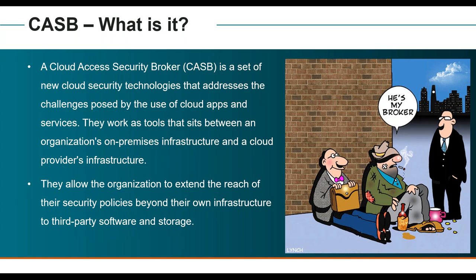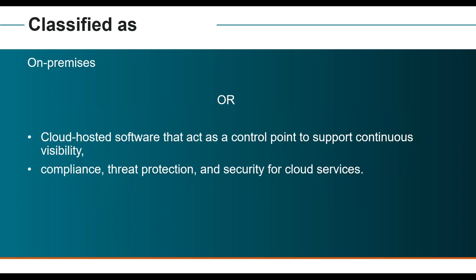There are two major deployment types. One is on-premise, where you can deploy an appliance, virtual software, or virtual machine onto your network. The second is cloud-hosted software for continual visibility, compliance, data protection, and security for your cloud services. The most popular today is cloud-hosted software, because nobody wants the overhead of managing their own CASB appliance.